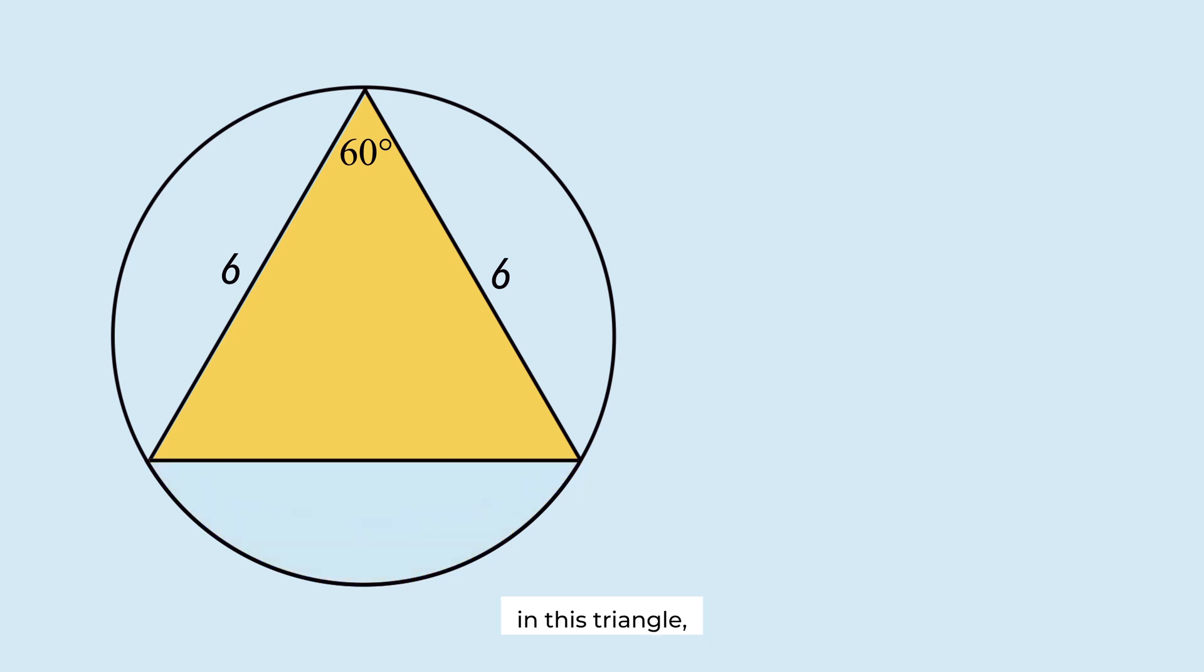In this triangle, the lengths of the two sides are both 6. Since this is an isosceles triangle, the two base angles are equal. The sum of these angles must be 120 degrees, so each of these angles is 60 degrees. This triangle is an equilateral triangle.